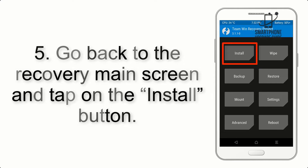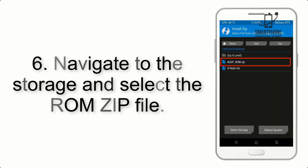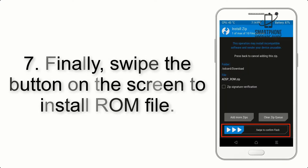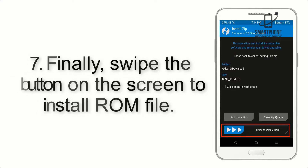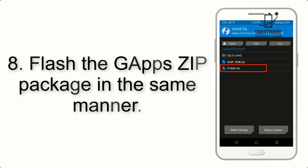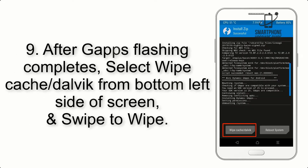Step 5: Go back to the recovery main screen and tap on the Install button. Step 6: Navigate to the storage and select the ROM zip file. Step 7: Finally, swipe the button on the screen to install the ROM file.